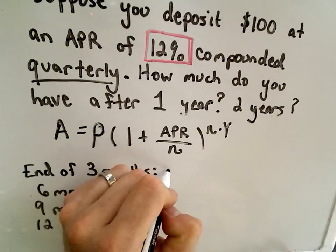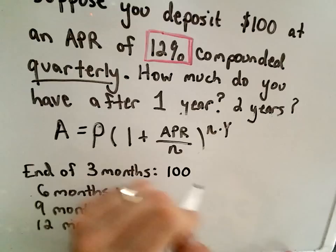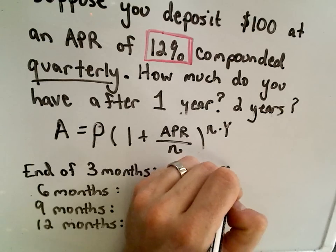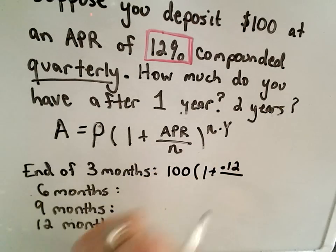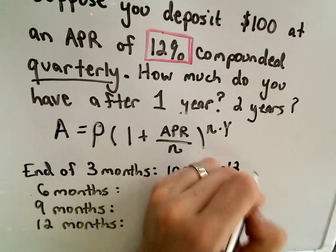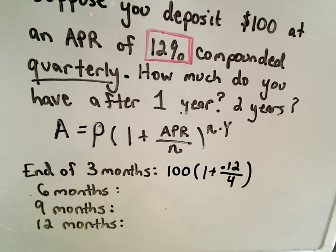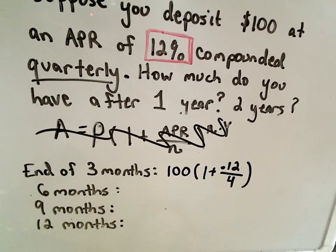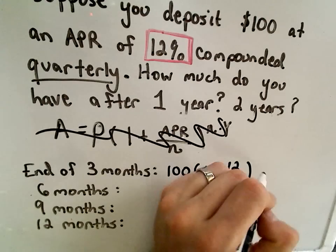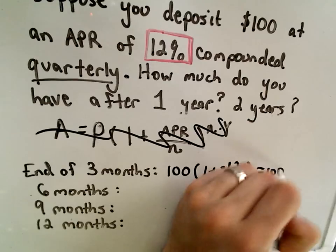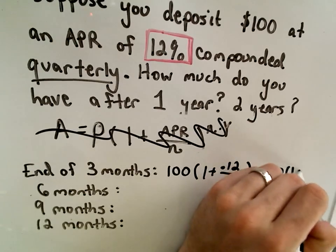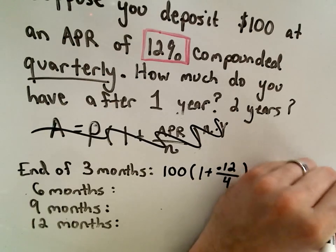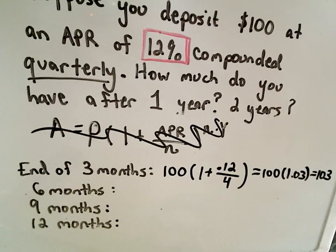It says I take 1 plus, and I take my APR and divide that by N, which in this case is 4. So forget about the formula for a second. Let's just think about intuitively what we would have to do to calculate the amount that we're going to get. So this will be 100 times 1.03, which is simply going to be 103. So at the end of three months, I've got $103 in there.